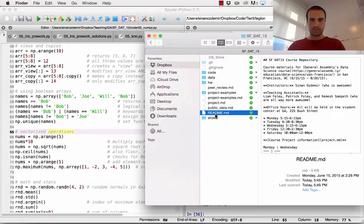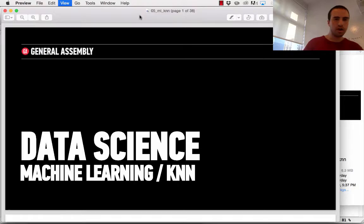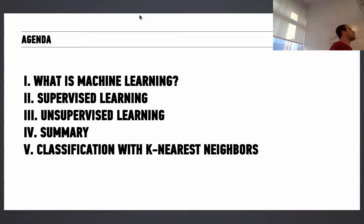Now we're going to transition into the ML slides. We'll cover what machine learning is, two important types — supervised and unsupervised learning — and then get into classification with K-Nearest Neighbors, which will be the first machine learning algorithm we do in this class.